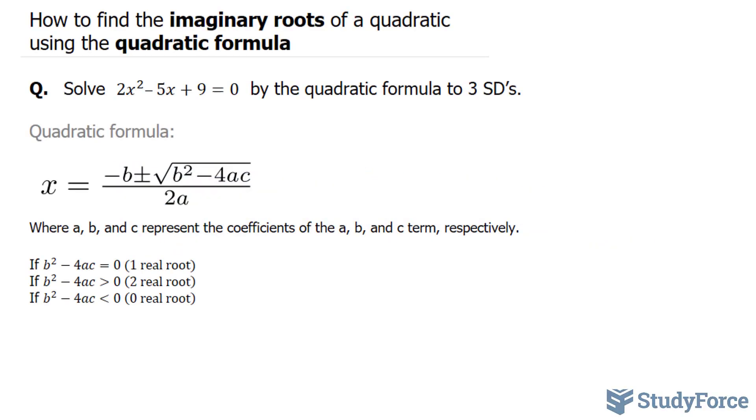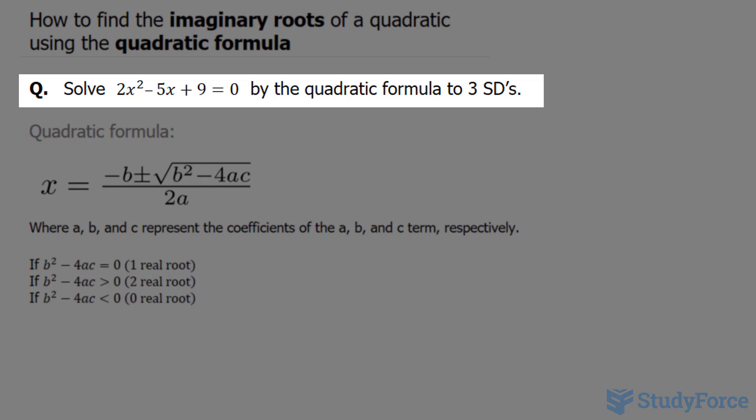In this video, I'll show you how to find the imaginary roots of a quadratic using the quadratic formula. The question reads, solve 2x squared minus 5x plus 9 is equal to 0 by the quadratic formula to 3 significant digits.